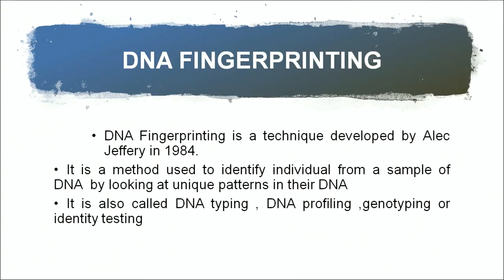Another technique used frequently in forensic sciences and to determine paternity is DNA fingerprinting, a technique developed by Alec Jeffrey in 1984. It is a method used to identify an individual from a sample of DNA by looking at unique patterns in their DNA. These unique patterns in human beings come from junk DNA and repeated sequences — VNTR sequences, variable number tandem repeats. These sequences do not code for anything, are passed on from generation to the next generation, and show a lot of polymorphism.